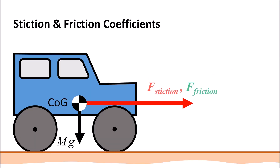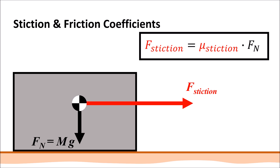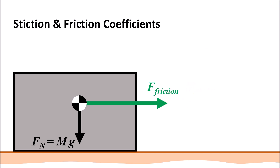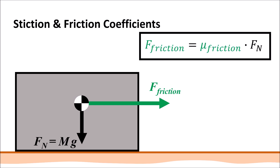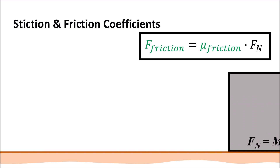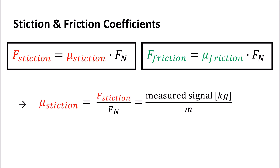The stiction or friction force can be computed from the respective coefficient multiplied by the normal force acting onto the ground. The coefficient can be derived when knowing the mass of the object and the stiction or friction force.